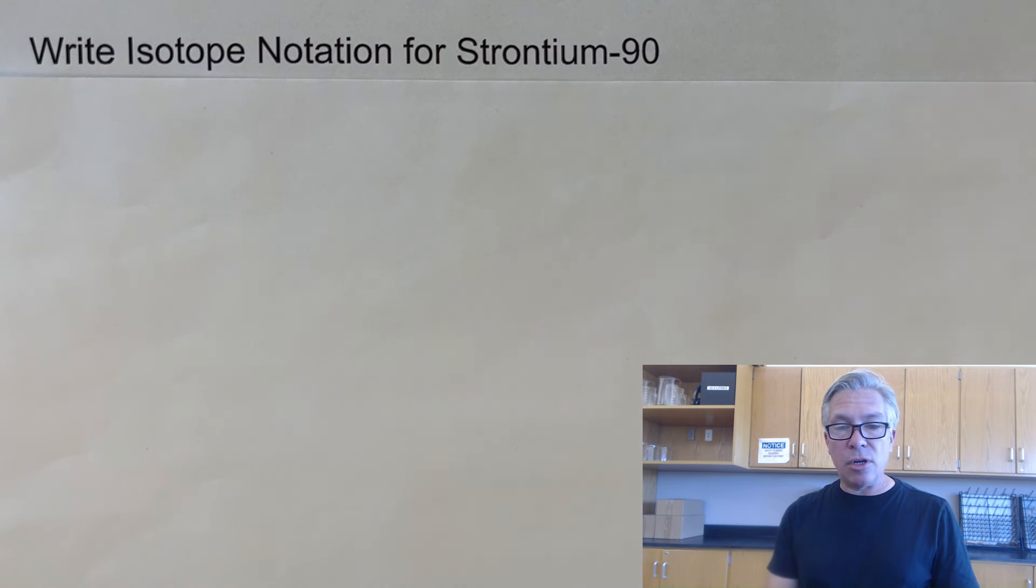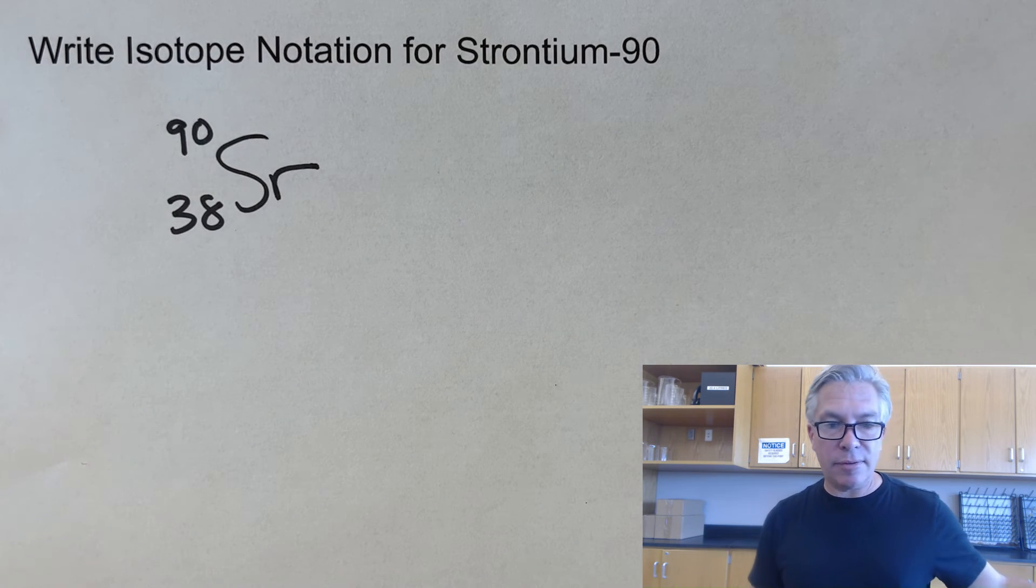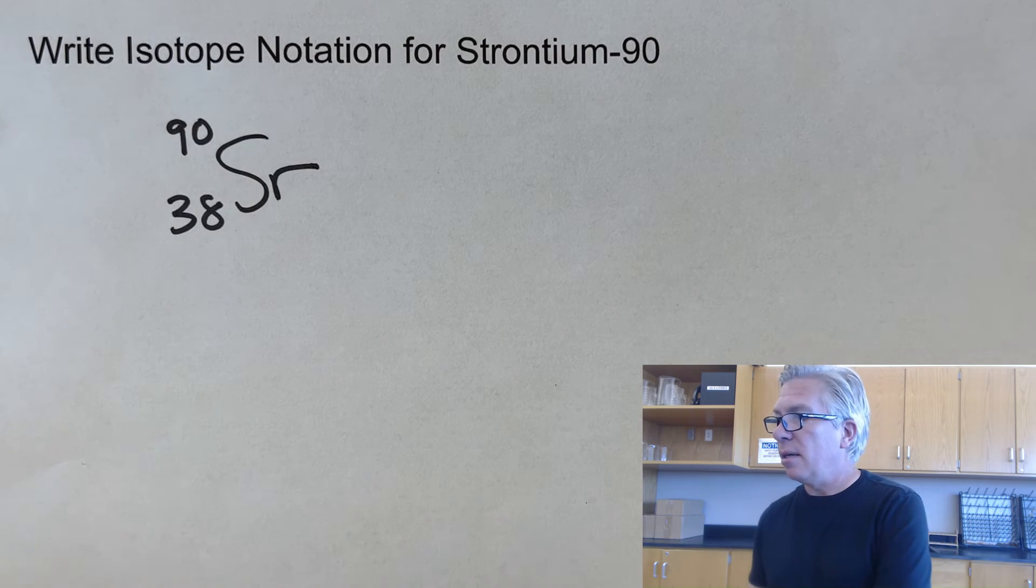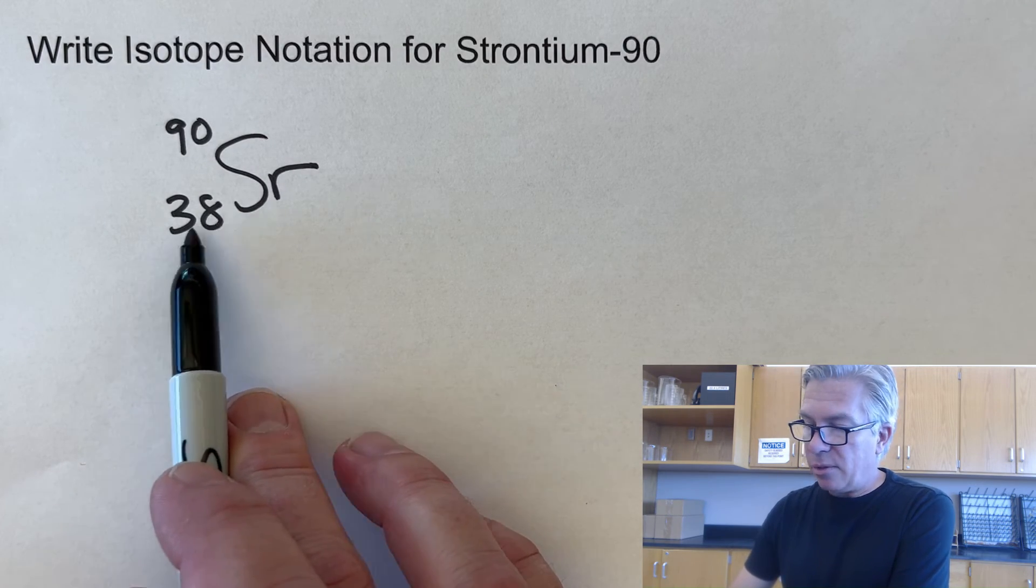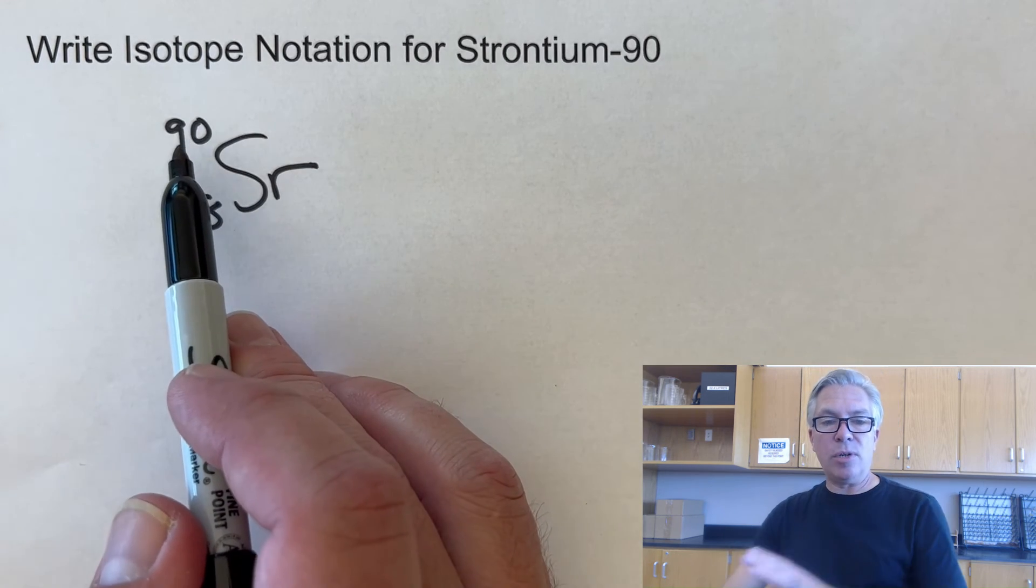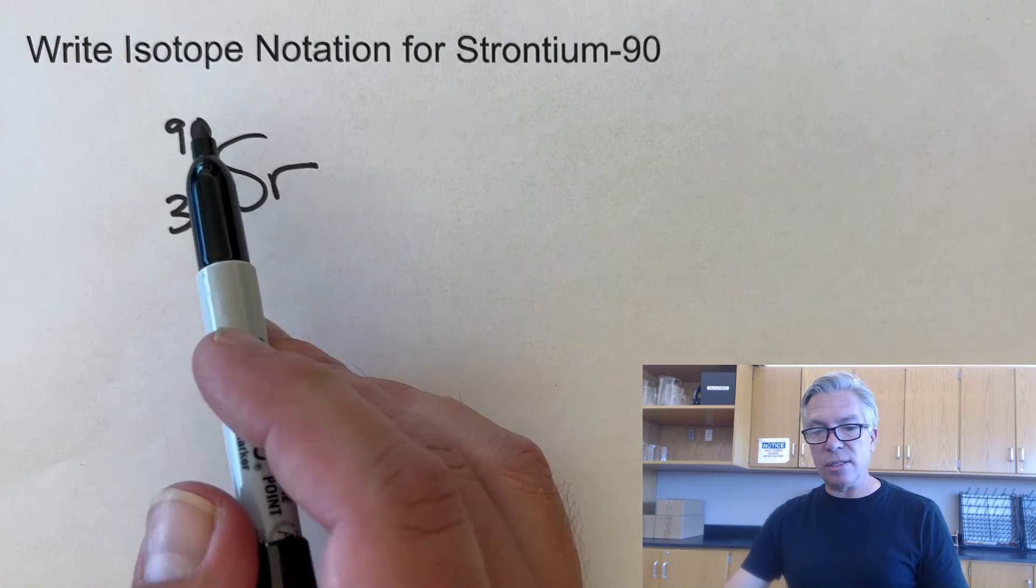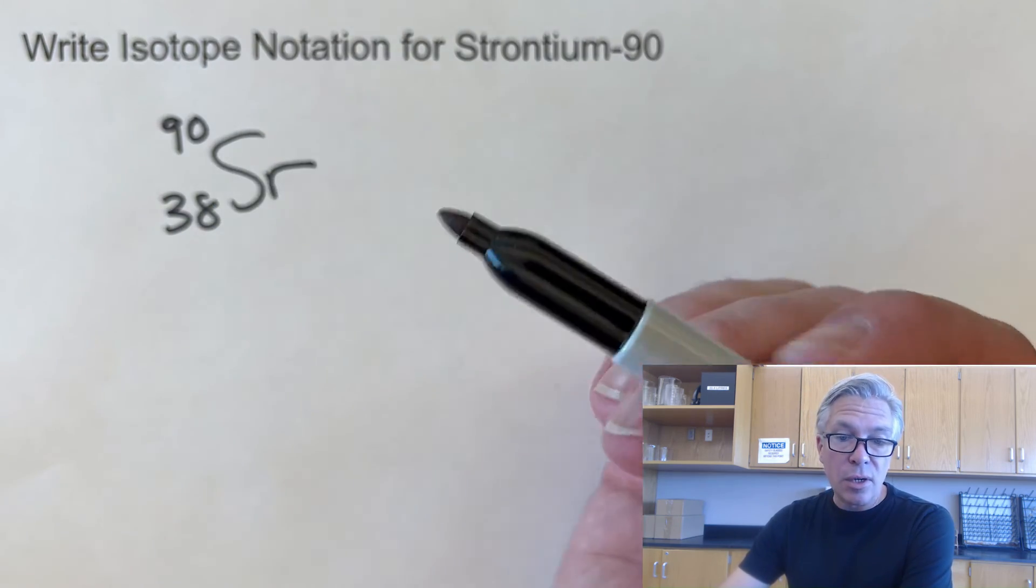All right. So if you were able to write isotope notation and have it look something like this, then congratulations, you are off to a good start on isotope notation. Strontium is element 38 on the periodic table. So 38 protons goes in the bottom. 90 is the mass number, which is the total of protons and neutrons. And if you were to subtract those, you would find that it has 52 neutrons.